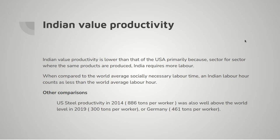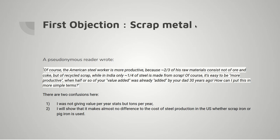The US is higher even compared to other capitalist countries — for instance, in Germany they only produce 461 tonnes per worker. Now, a reader says: 'Of course the American steel worker is more productive, because two thirds of his raw materials are not ore and coke but recycled scrap, whilst in India only a quarter of steel is made from scrap. Of course it's easy to be more productive when half of your value added was already added by your dad 30 years ago.' There are two confusions here.